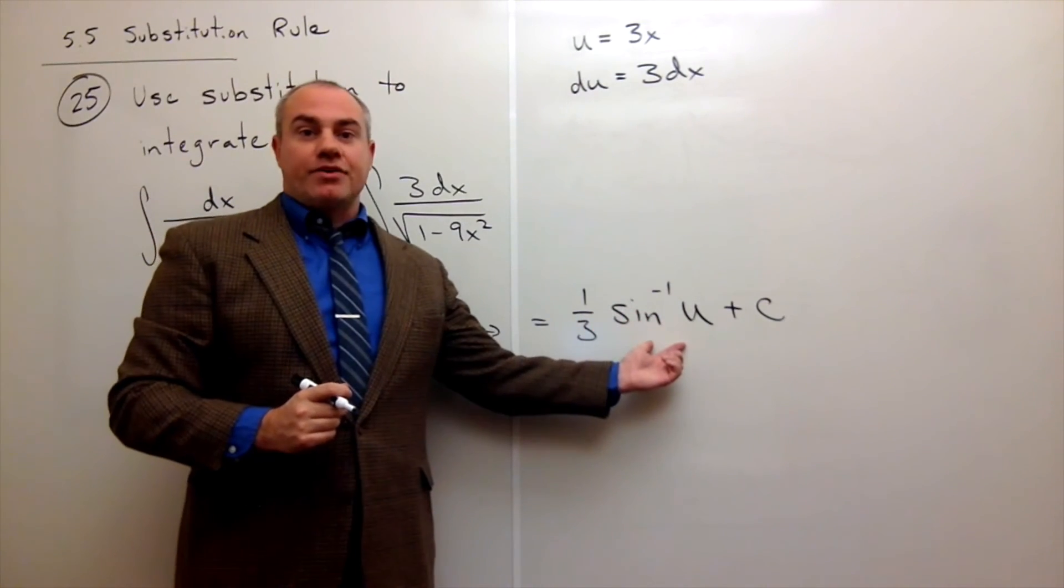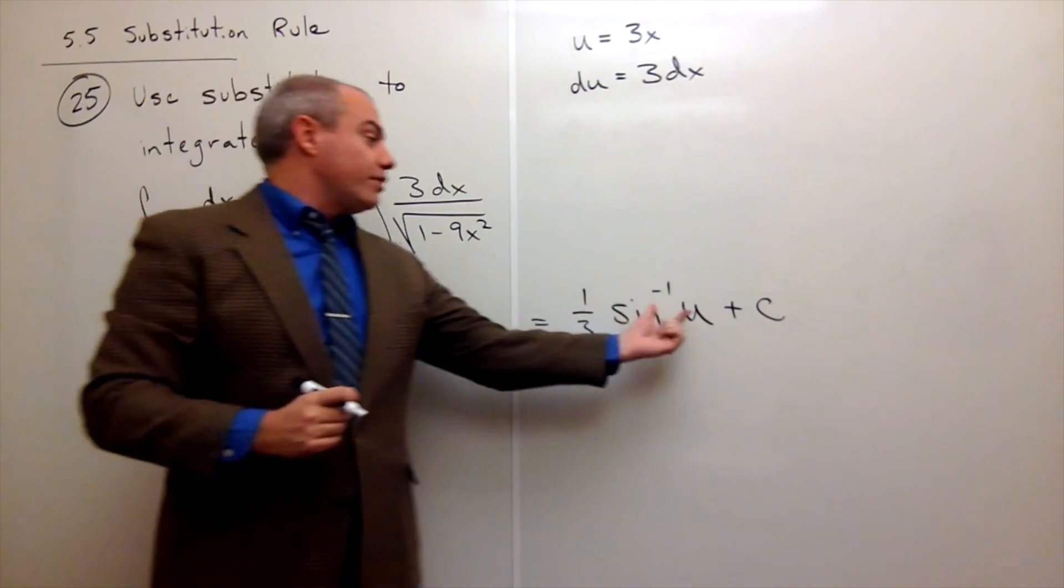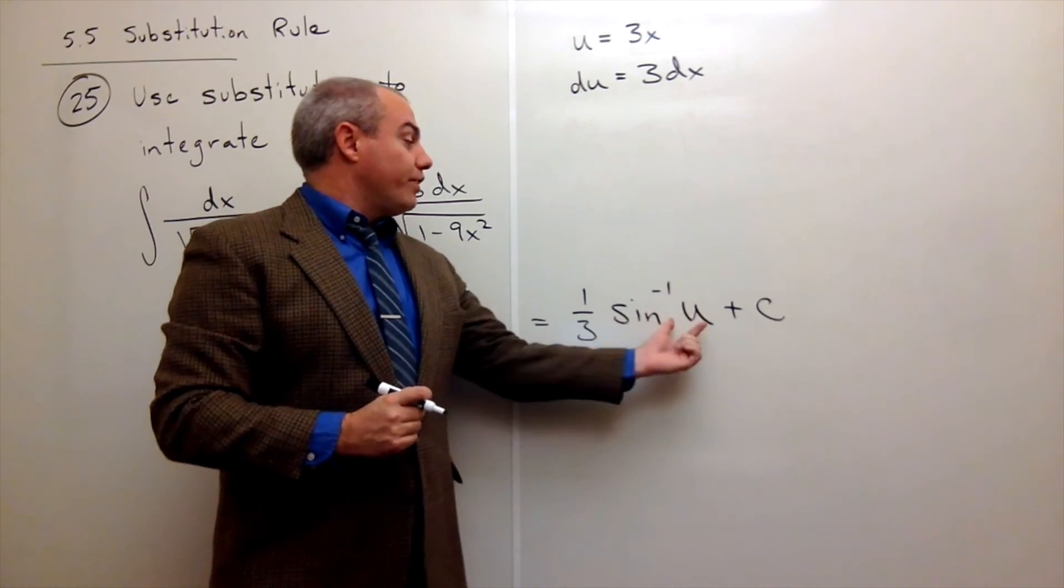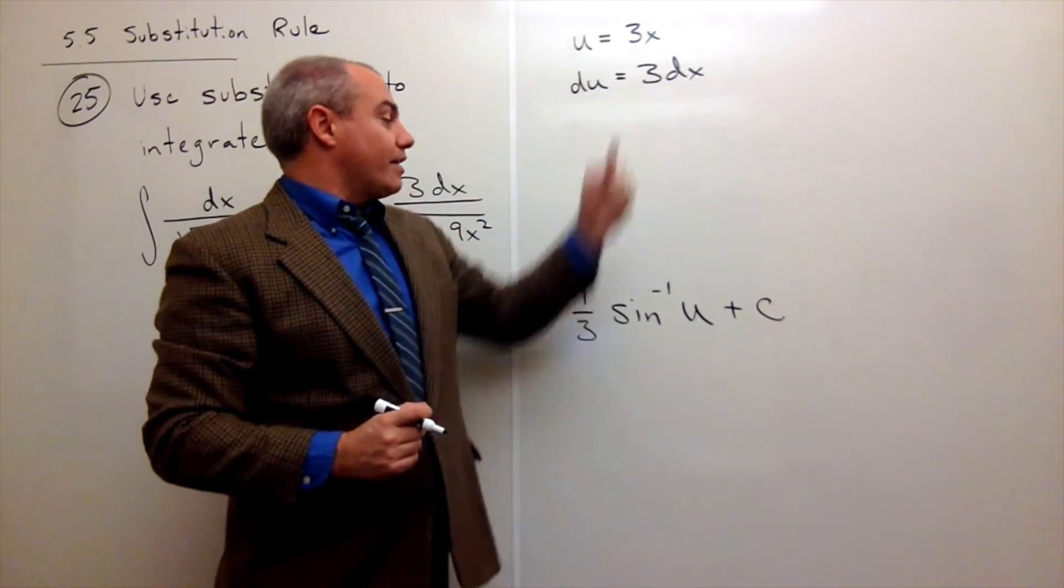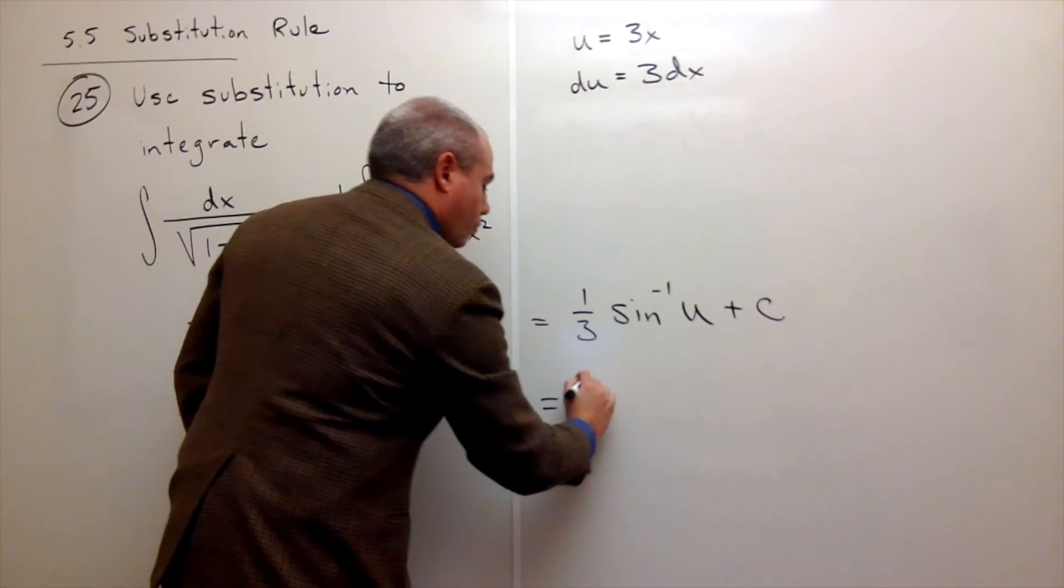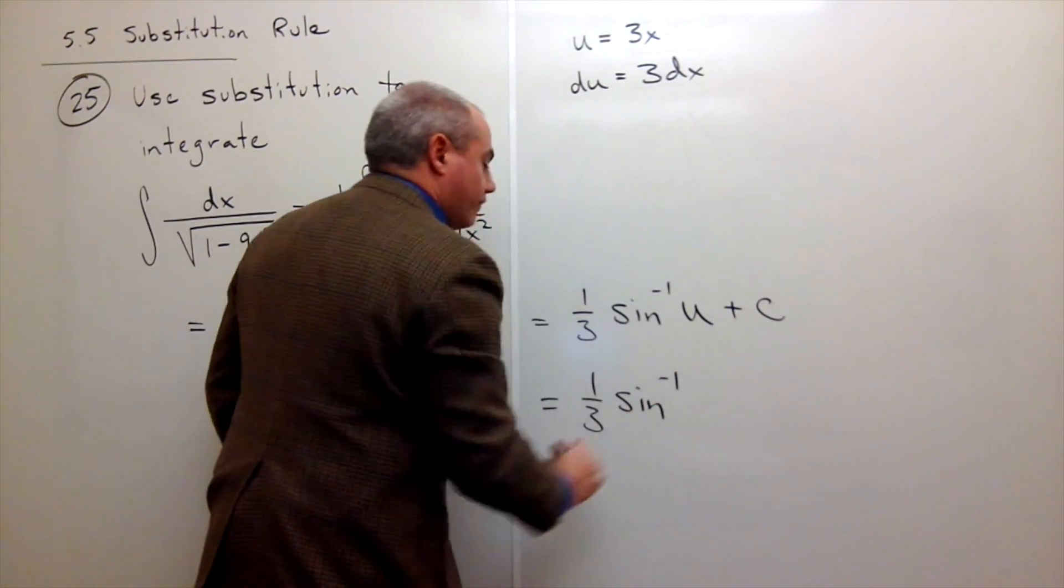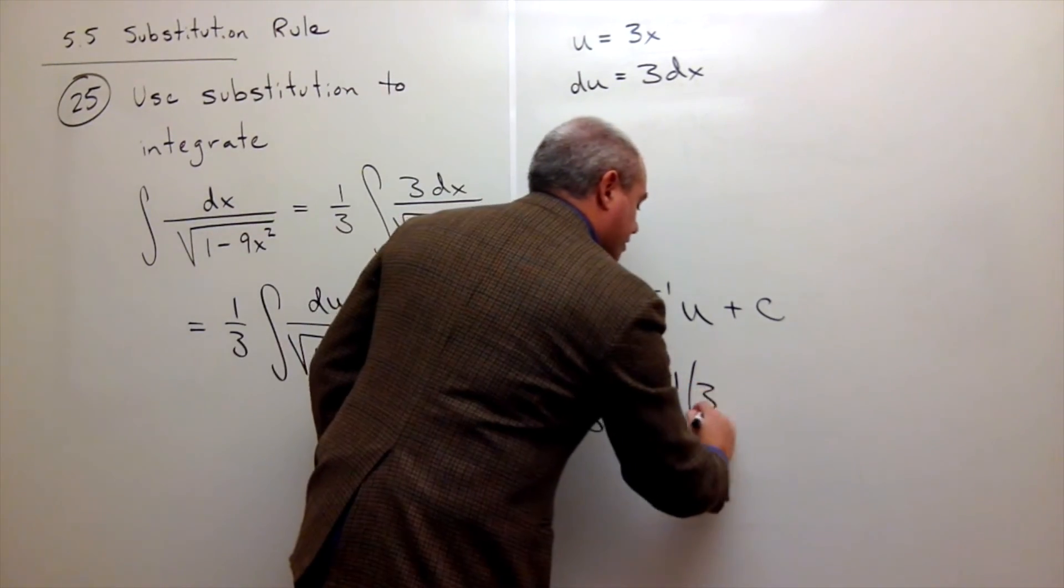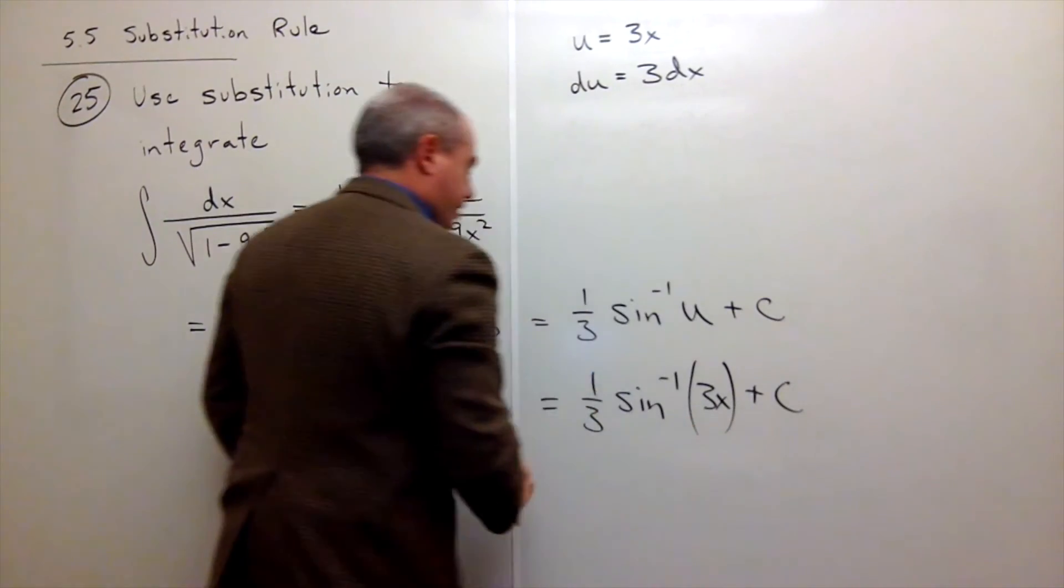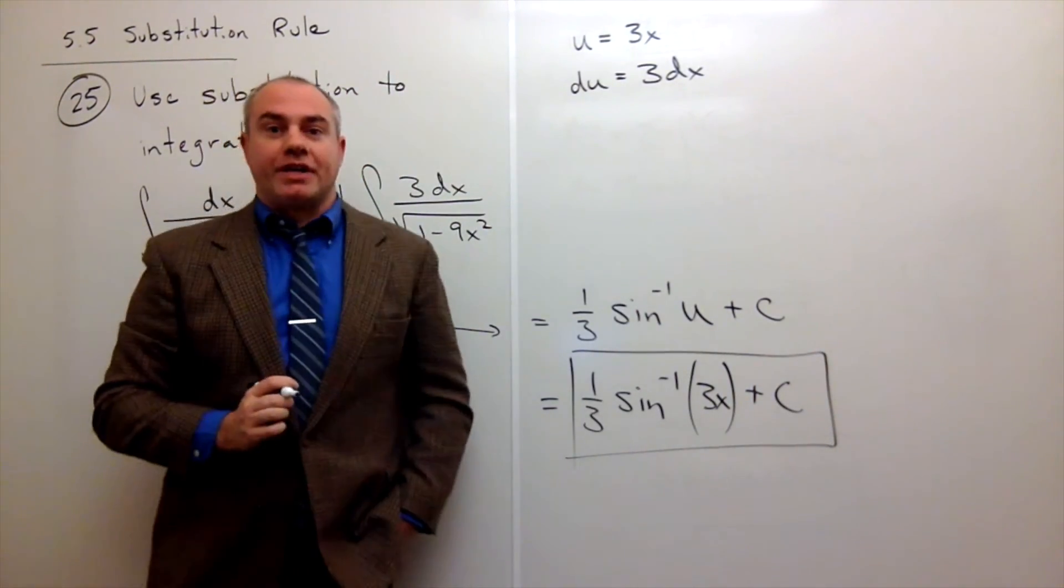So we've taken the antiderivative. The only thing we have left to do is we need to replace the u with x's. And we know that u is equal to 3x. So we can rewrite this as one-third sine inverse of 3x plus our constant. And we found the antiderivative.